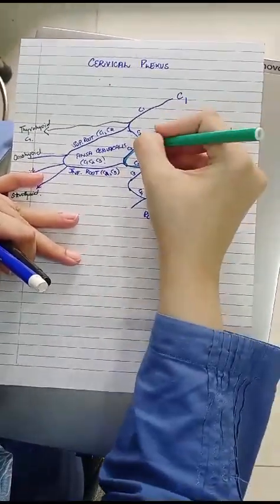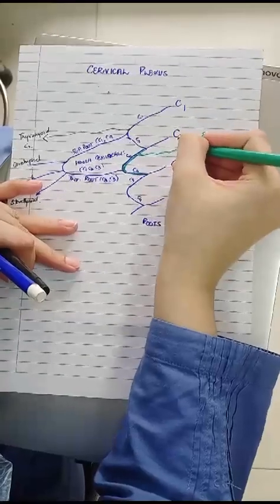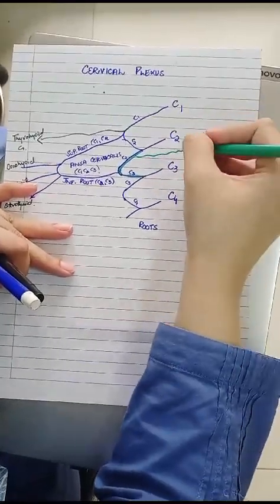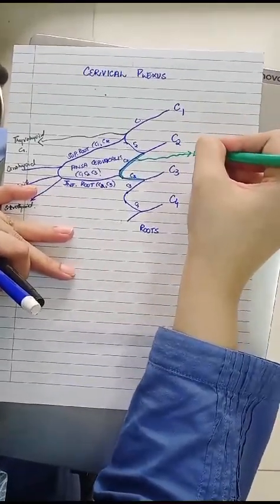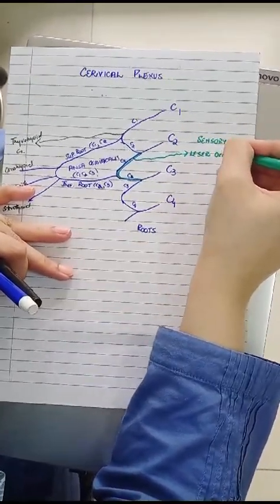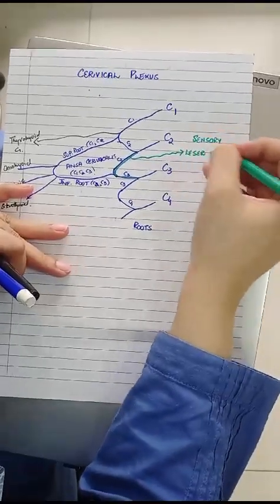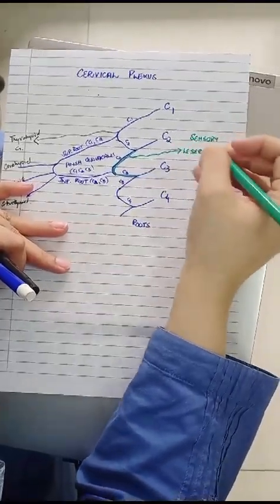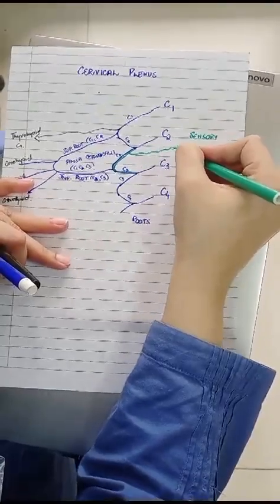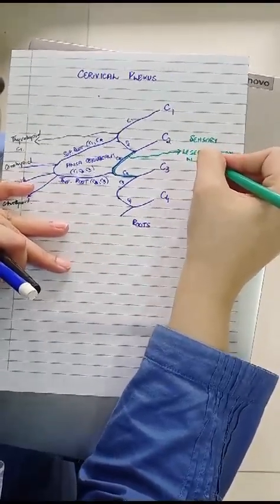The first branch which arises is the one contributed by C2 which is the lesser occipital nerve. This nerve is responsible for supplying the skin of the back of the neck and the occipital area or the small area of the skull. Its root value is C2.